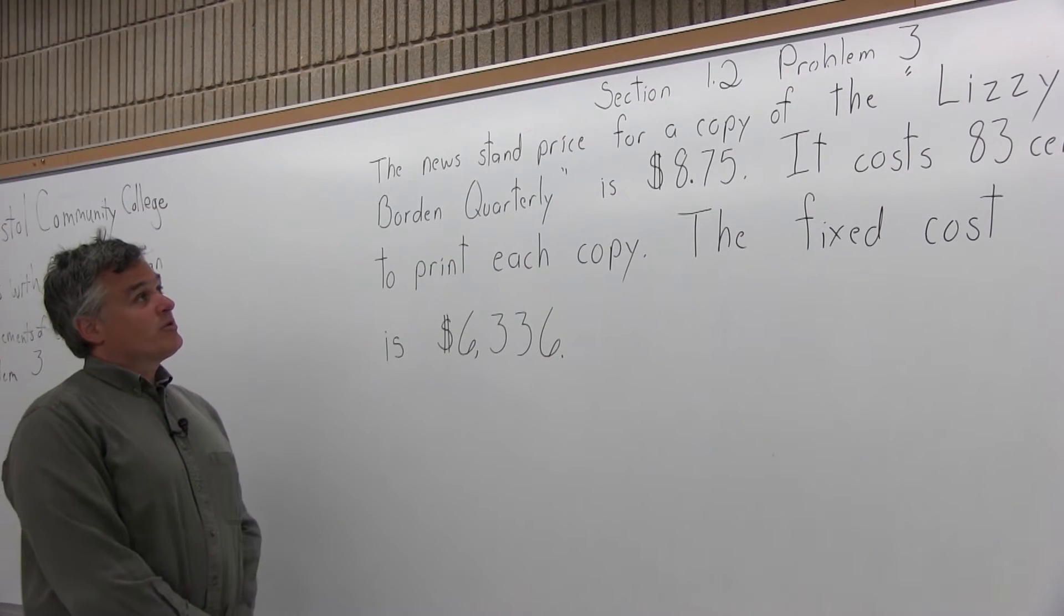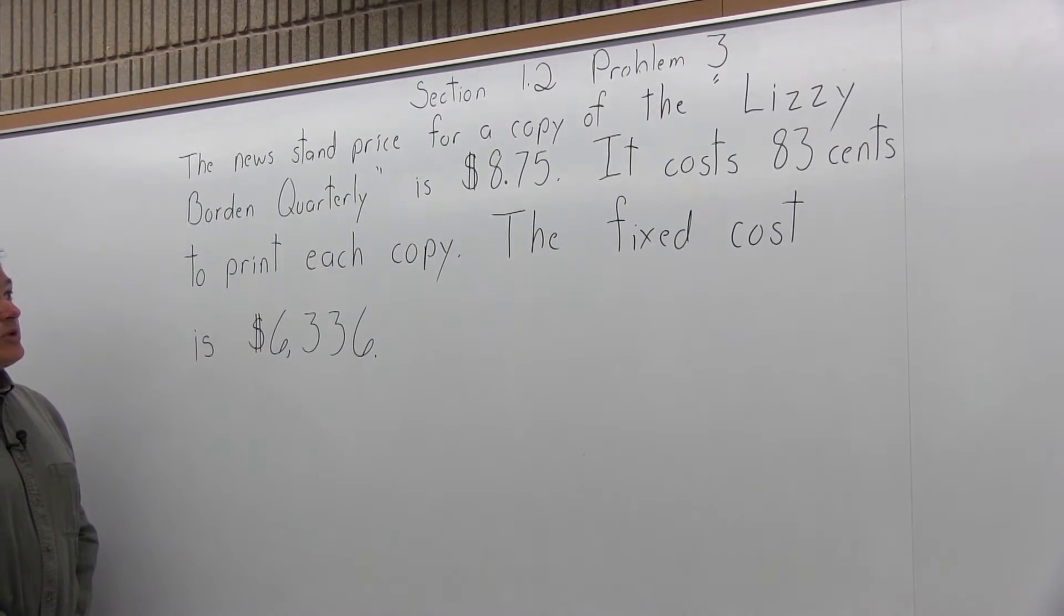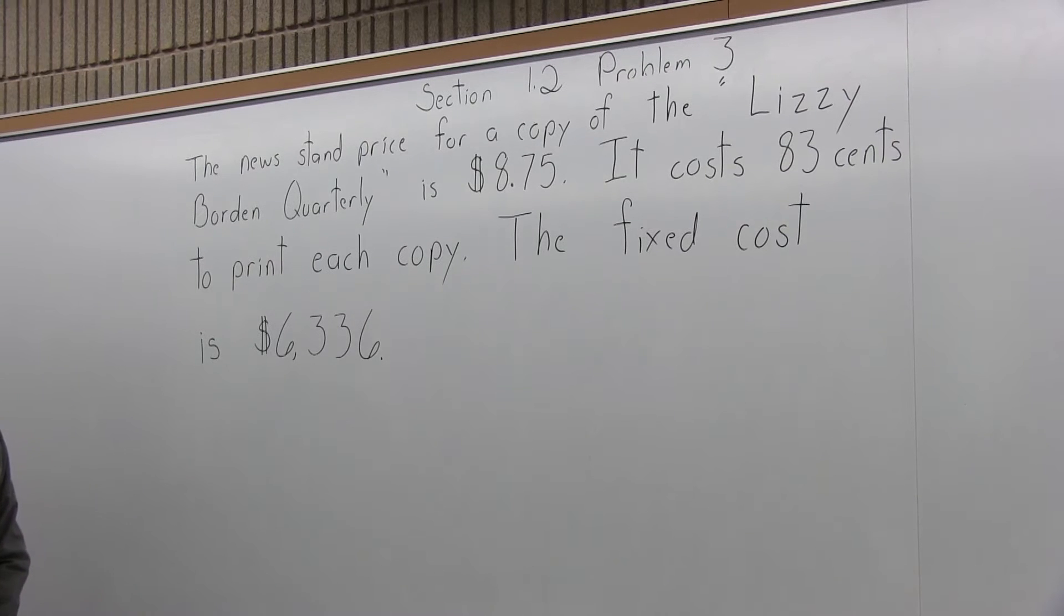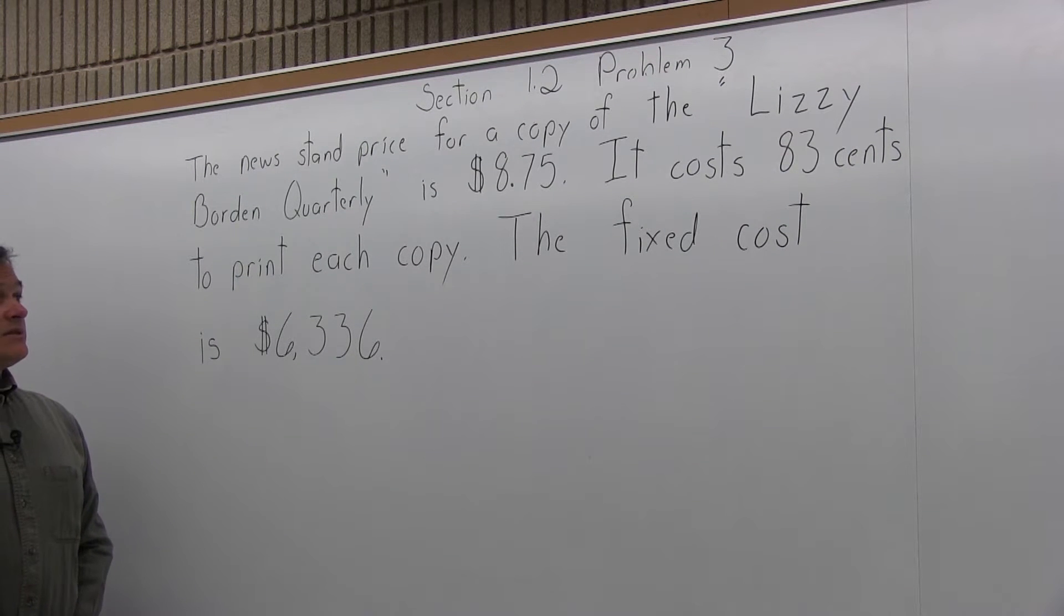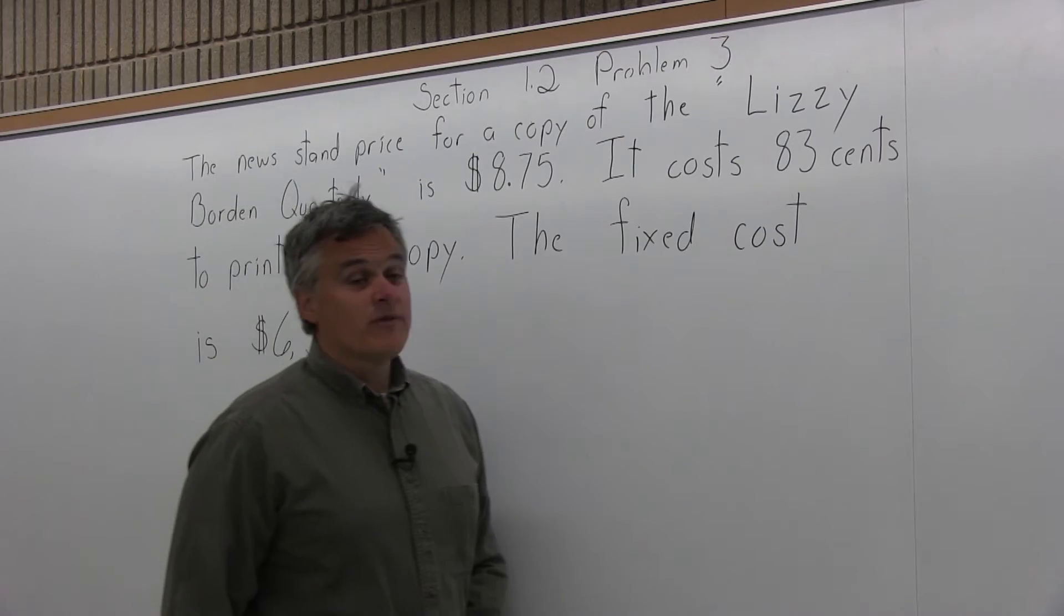This is problem number 3 from Section 1.2. It says the newsstand price for a copy of the Lizzie Borden Quarterly is $8.75. It costs $0.83 to print each copy and the fixed cost is $6,336. From this information we can answer the following 5 questions.